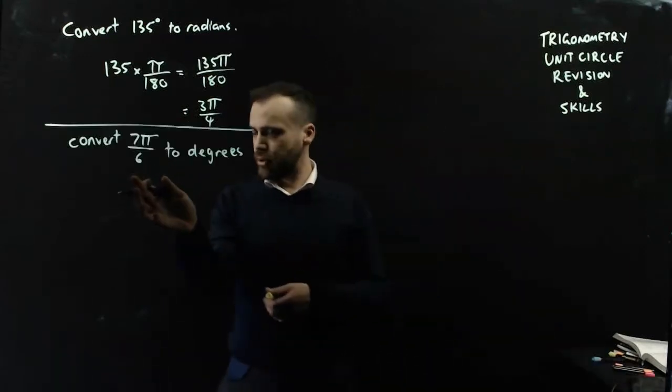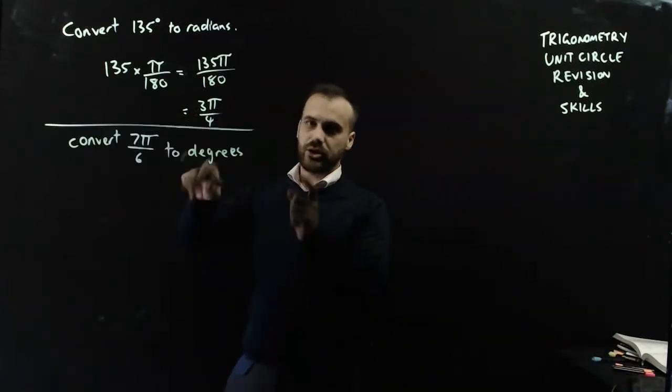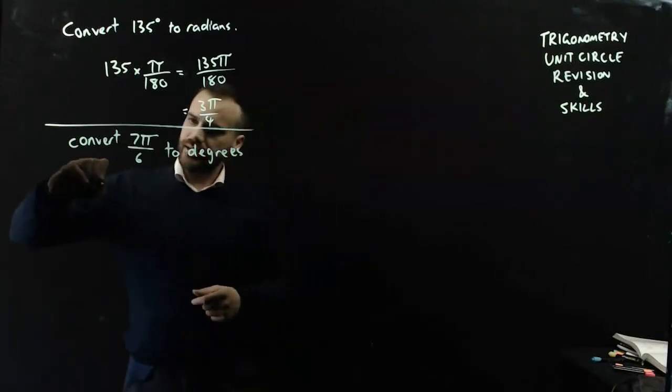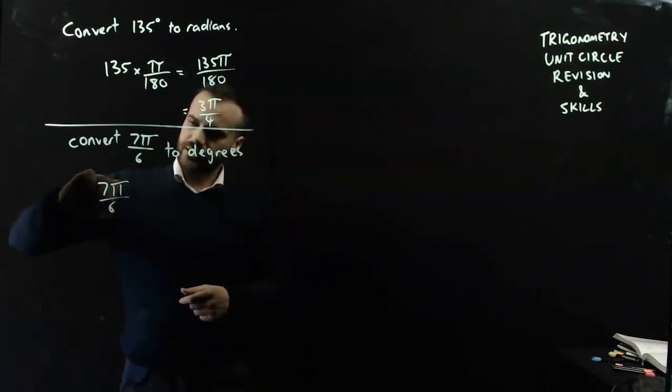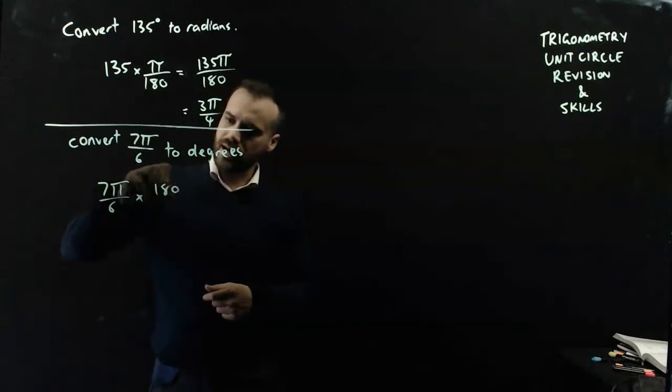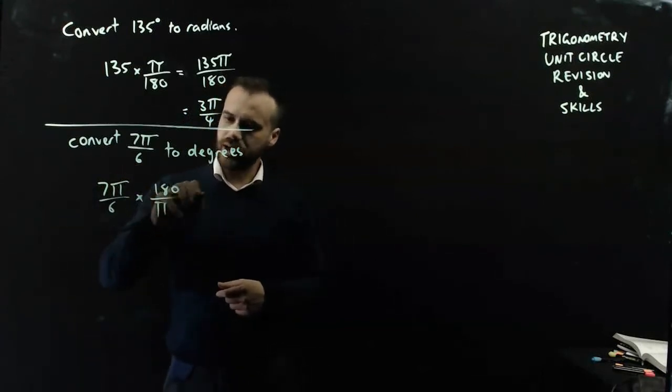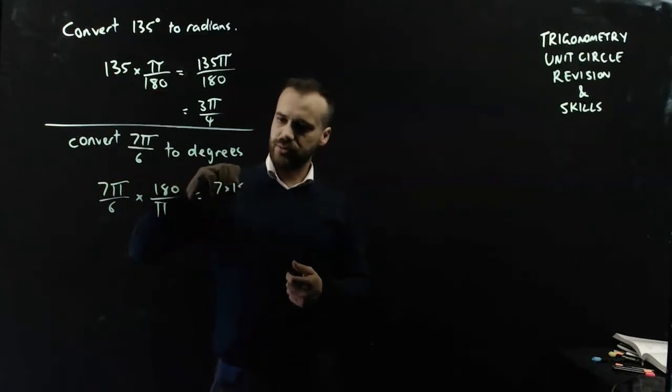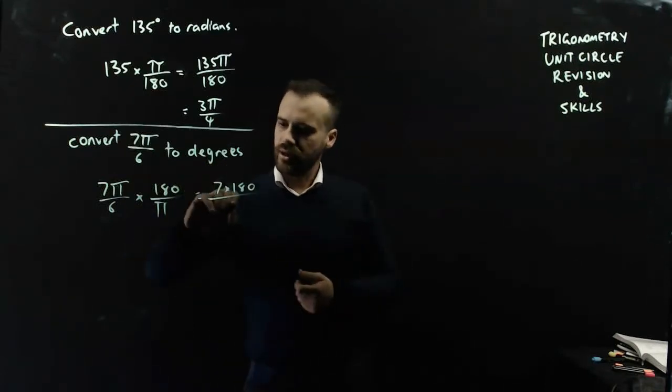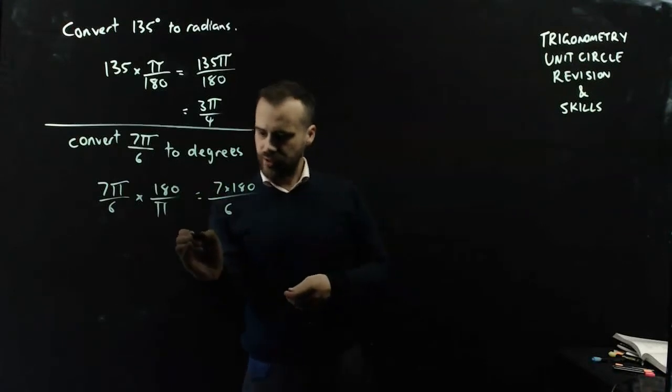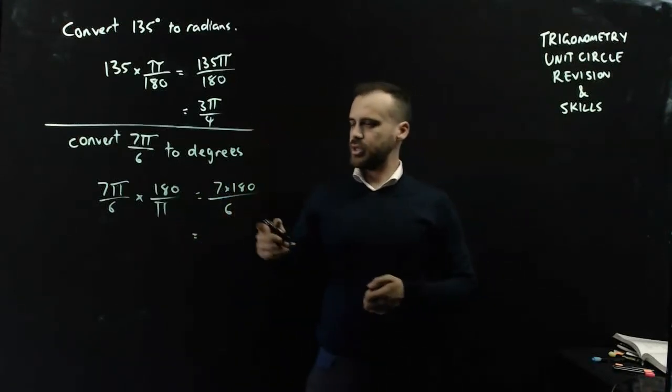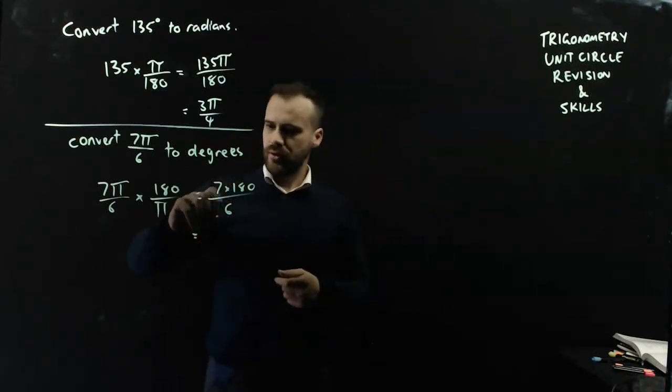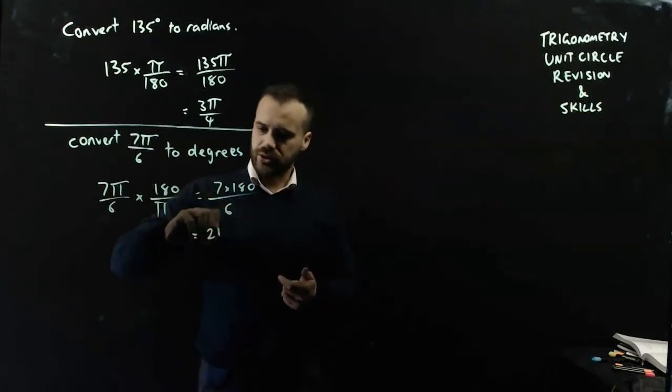So convert 7π on 6 to degrees. I'm going the other way. It's going to be 7π on 6 times 180 on π. The π's are going to cancel out. It's going to be 7 times 180 on 6. When I simplify that, I'll get 210.